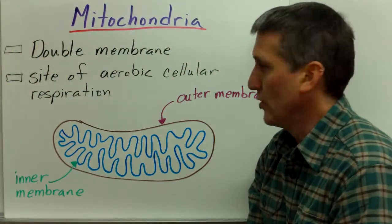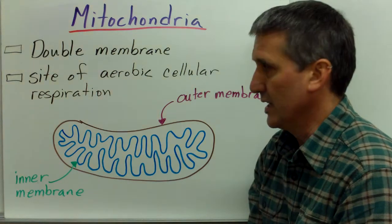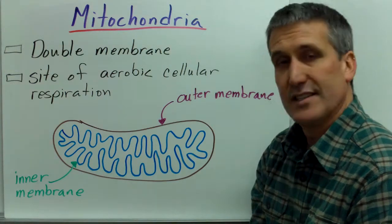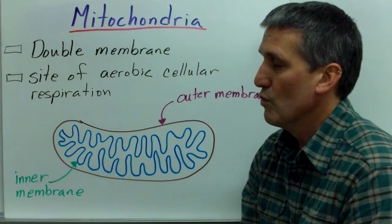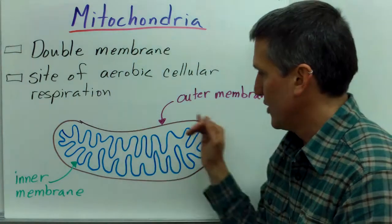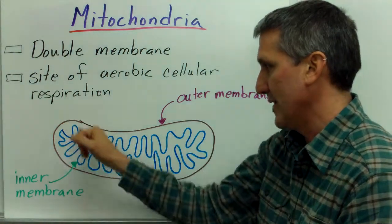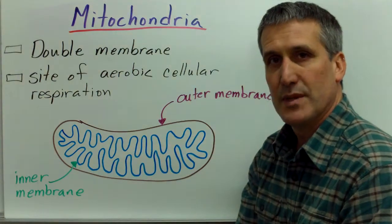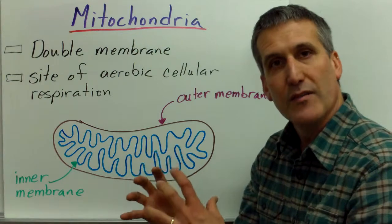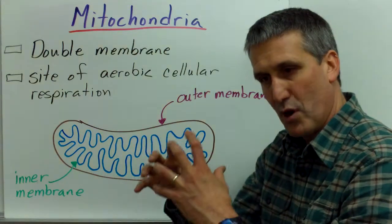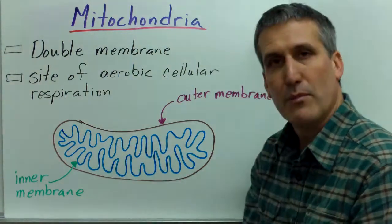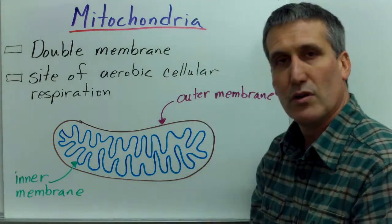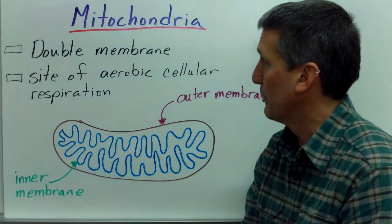The last organelle we're going to focus on is the mighty mitochondria. This is again a very specialized double membrane organelle. It's the site of aerobic cellular respiration and it's often drawn with an outer membrane and then a complex loopy inner membrane system. This is an area of cytoplasm partitioned off by the special membrane-bound organelle where the very specific chemical reactions of cellular respiration take place.